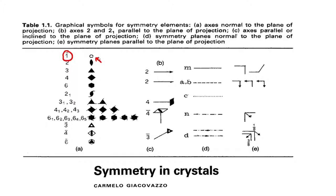If you consider a two-dimensional object which has an inversion center, that particular object will have not just the inversion center indicated, but also translational periodicity. If it has translational periodicity, it will have a plane lattice. If it has a plane lattice, it will have either no-fold, one-fold, two-fold, three-fold, four-fold, or six-fold symmetry. It would not be having any other symmetry elements.